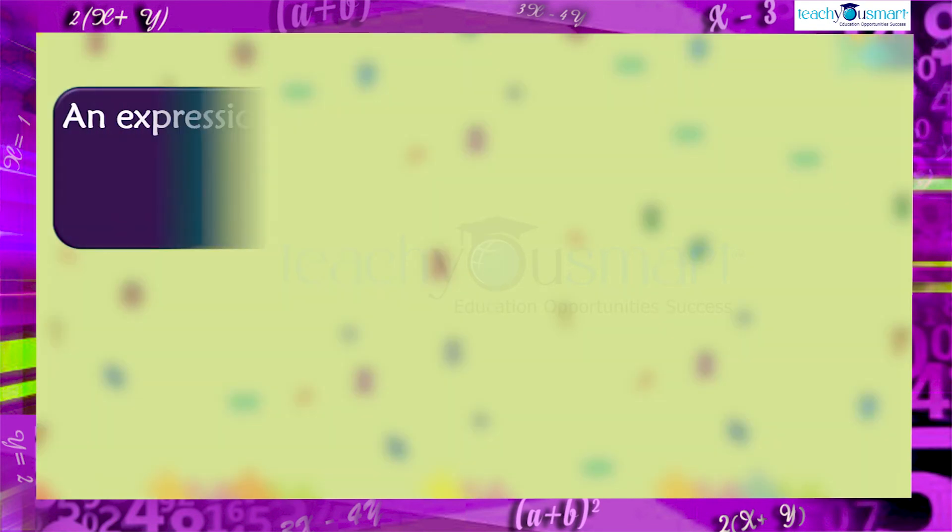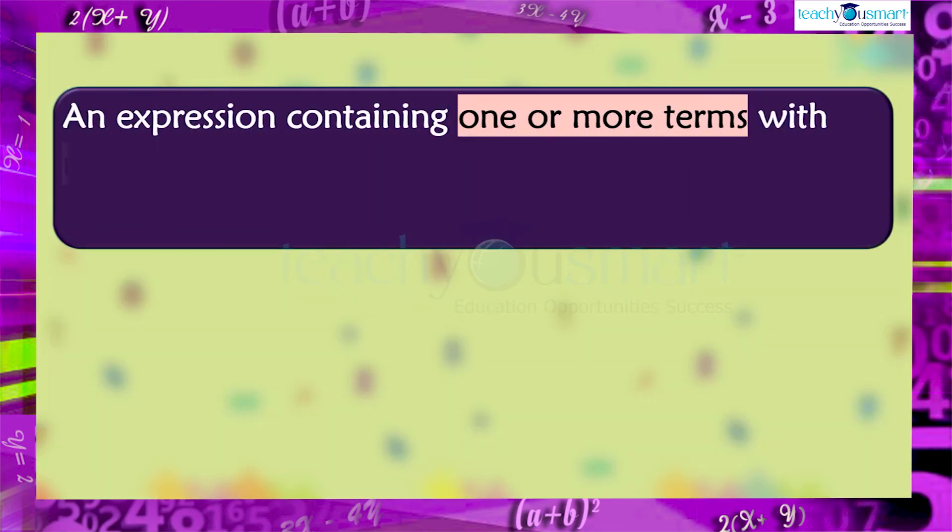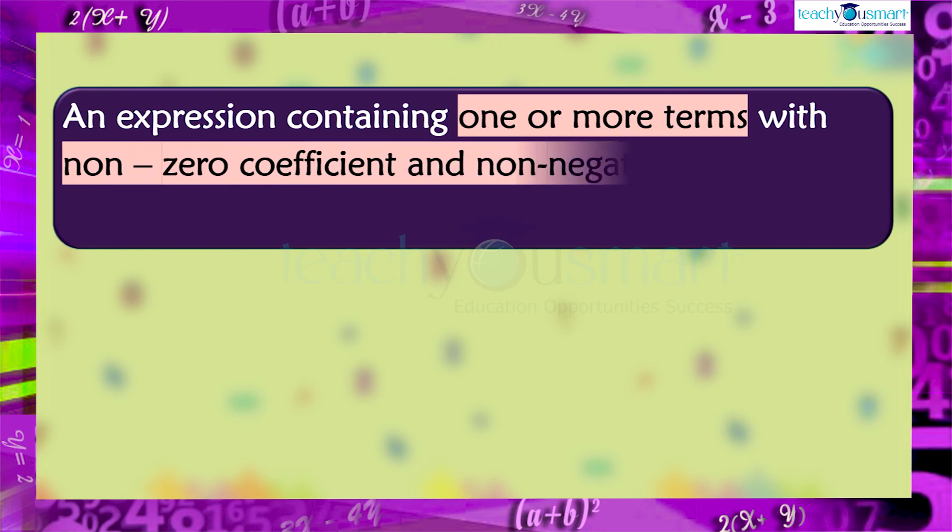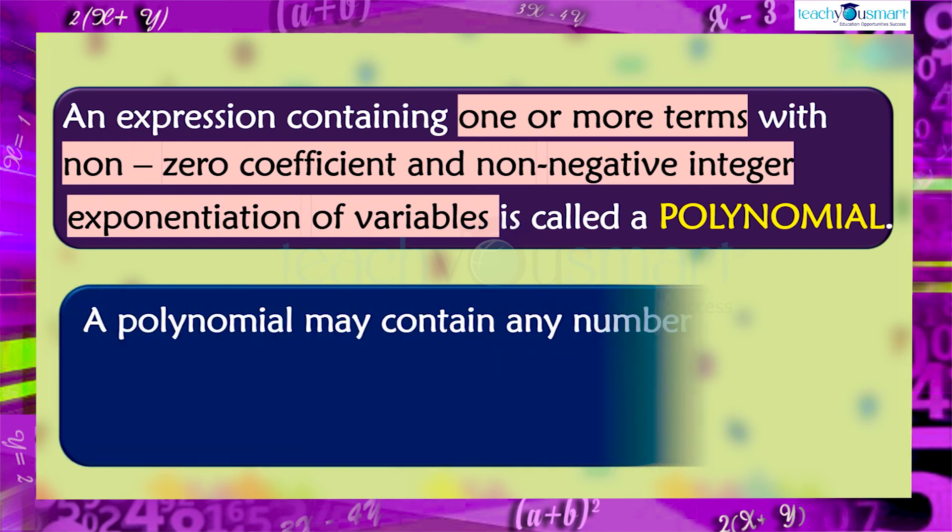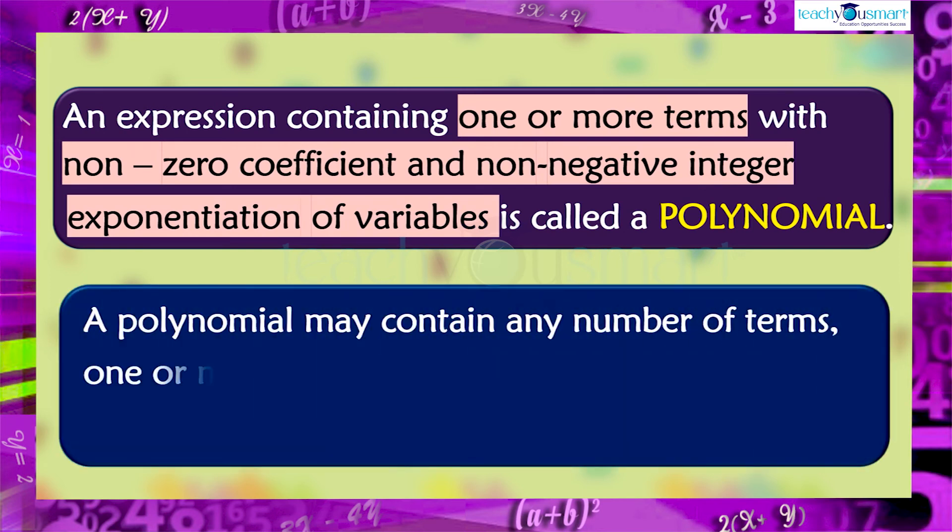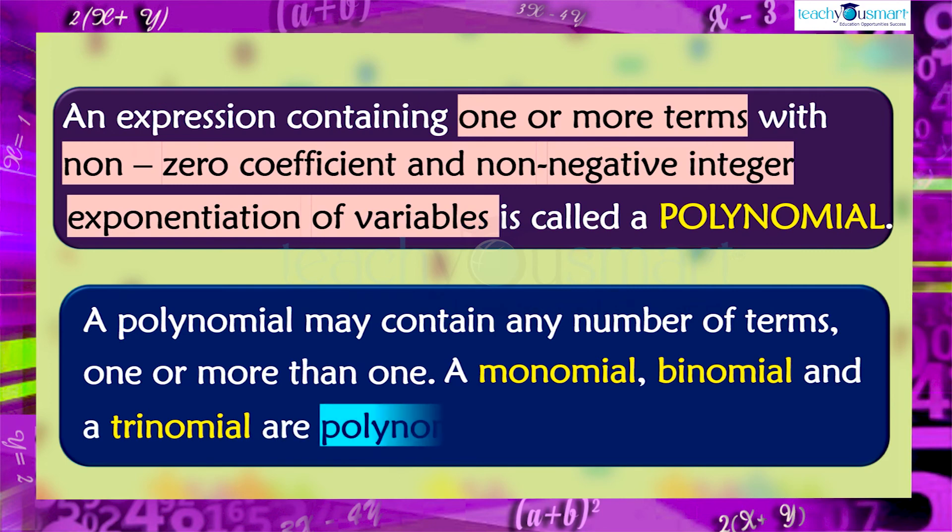In general, an expression containing one or more terms with non-zero coefficient and non-negative integer exponentiation of variables is called a polynomial. A polynomial may contain any number of terms, one or more than one. So a monomial, binomial and trinomial are polynomials.